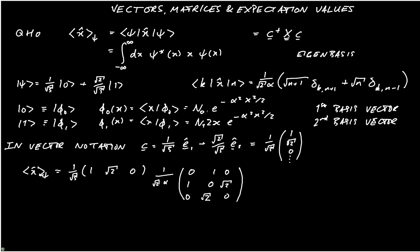And now we need ket of psi, or the c vector, which is 1 over root 3 into 1, root 2, 0. I'm going to take the two factors of 1 over root 3 to the left-hand side, along with the 1 over root 2 alpha. So I'm going to have 1 third multiplied by 1 over root 2 alpha. I'm going to have the row vector 1, root 2, 0.